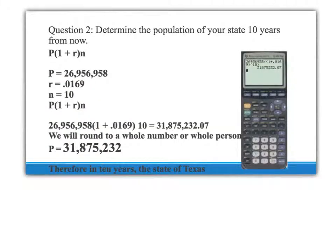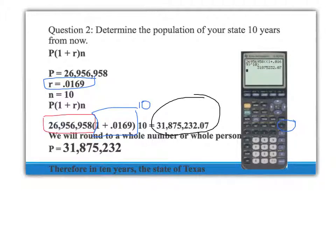We've got our P of 26,956,958, and we have one plus our rate of 0.0169, raised to the tenth power — using the caret symbol on your calculator for the exponent. That ended up giving us 31,875,232.71. Since there isn't 0.71 of a person, we round that off to a predicted population in ten years for the state of Texas of 31,875,232.